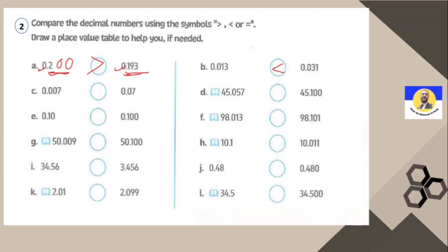Next: 0.007 and 0.07. Which one is the greatest? Here it's 7 in thousandths and here it's 0 in thousandths — so 7 in thousandths is the greatest in that position. To confirm, balance to three digits after the decimal point: 0.007 versus 0.070, which is 7 versus 70 — so 0.07 is the greatest.